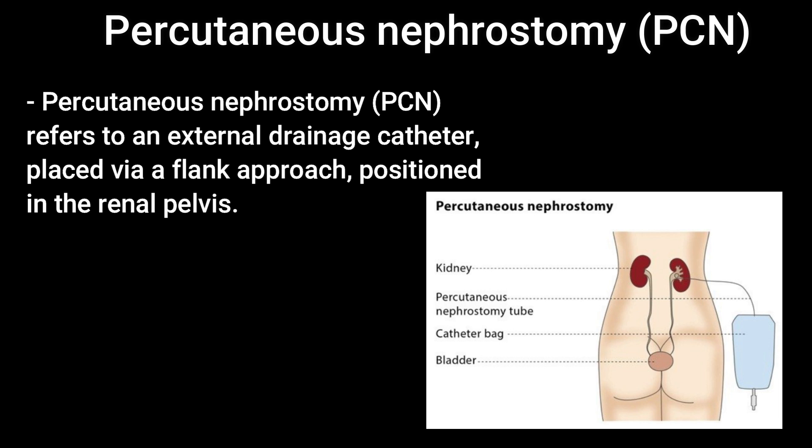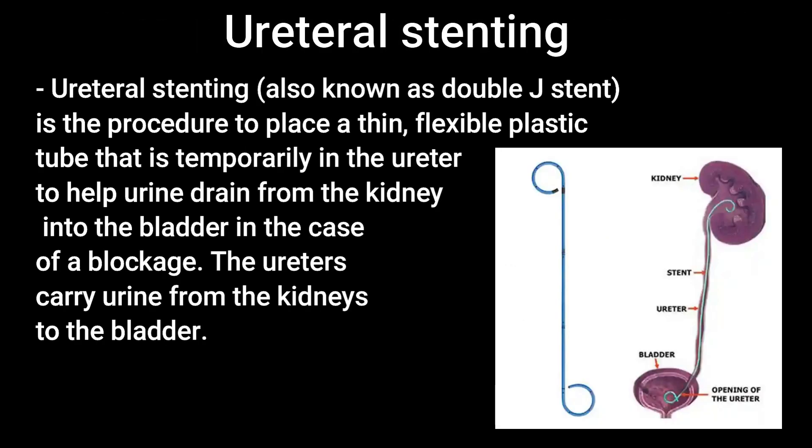Percutaneous nephrostomy refers to an external drainage catheter placed via a flank approach, positioned in the renal pelvis. Ureteral stenting is the procedure to place a thin, flexible plastic tube that is temporarily placed in the ureter to help urine drain from the kidney into the bladder in the case of a blockage. The ureters carry urine from the kidneys to the bladder.